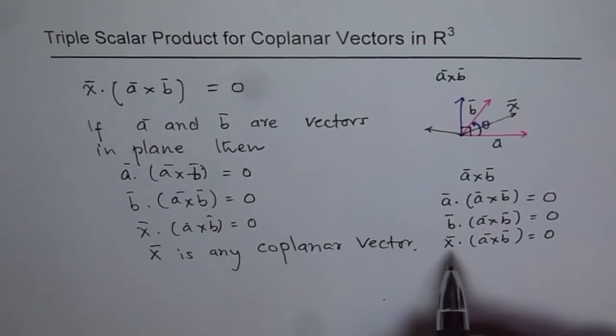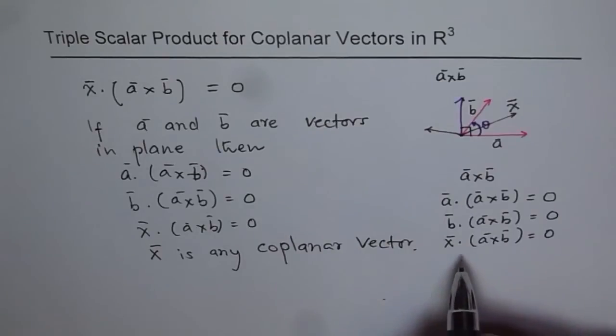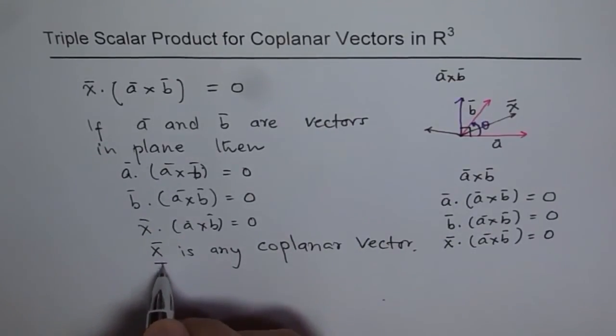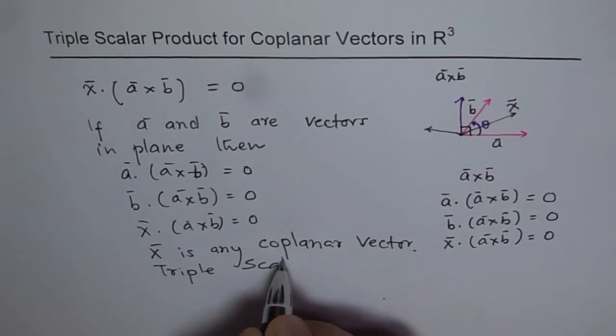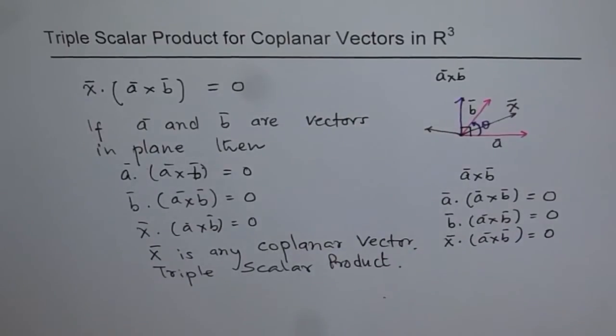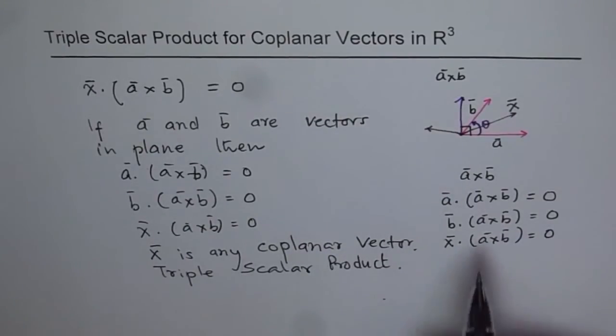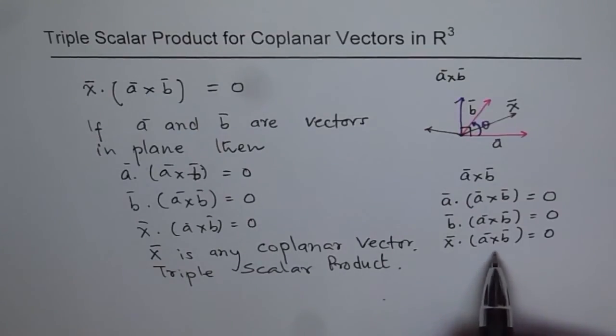And we have a name for this. Since dot product gives you a scalar quantity, we call it triple scalar product. And triple scalar product, one of its applications is that if dot product is zero—one of the main applications of triple scalar product is that if it is zero, then all the vectors involved are coplanar. It is kind of a must. They are coplanar.